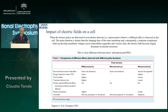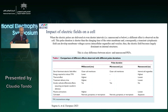When the electrical pulses are delivered at different intervals, you can compare the different effects observed with different pulse durations. Comparing millisecond, microsecond, and especially nanosecond pulses, you can appreciate that with nanoseconds, you can develop membrane voltages across the membrane and go inside the cell, where the dominant electrical effect is on the internal organelles.